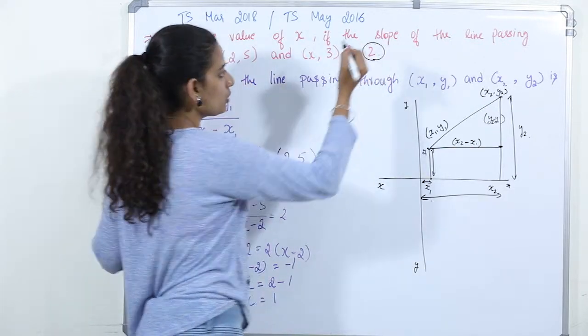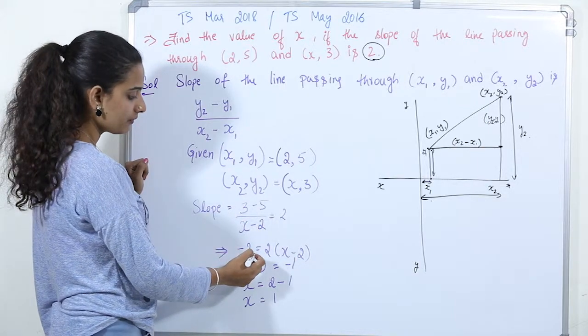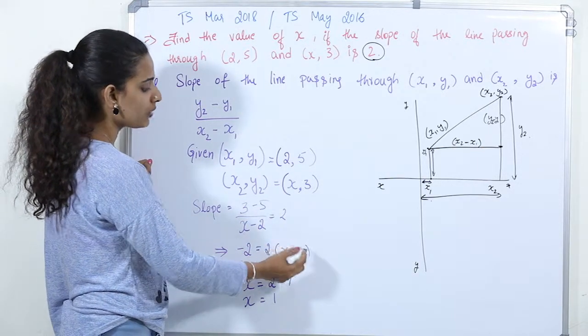So, 3 minus 5 is minus 2, which is equal to 2 times (x minus 2).